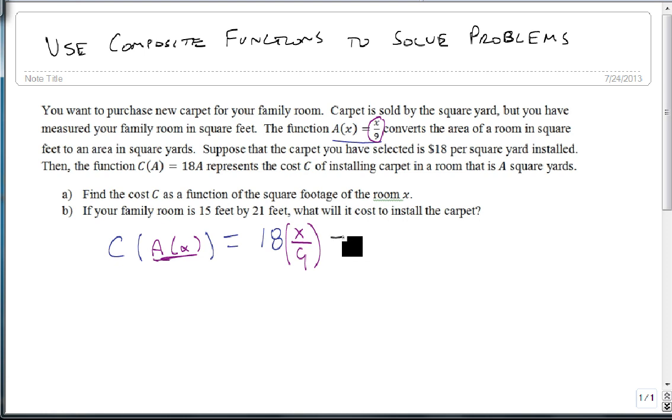This is going to give us 18 divided by 9 is 2, 2x, 2 times the footage. So that's our answer to a. C of x equals 2x.